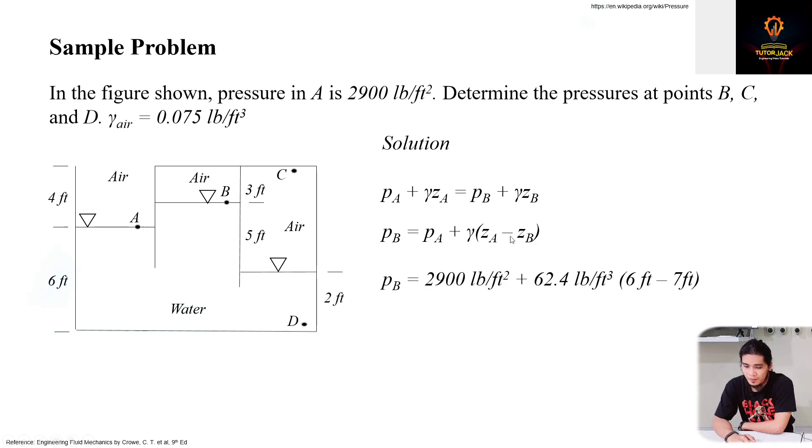We'll just move the gamma ZB to the other side. And then we have this equation. Let's substitute the given values. We have the pressure A, which is 2,900. This is the unit weight of water. And then you have the elevation at A, this is 6.